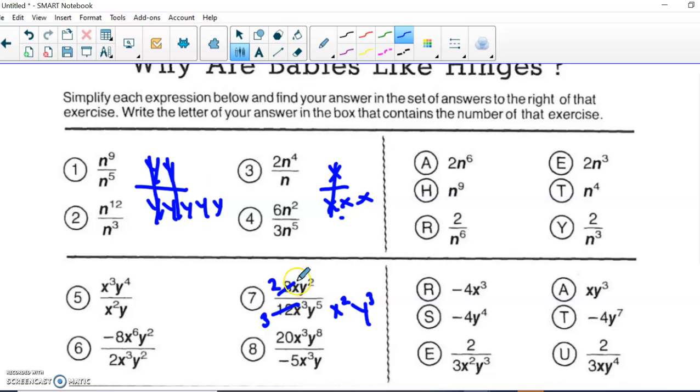So the answer I'm looking for is 2 over 3x to the second power, y to the third power. So it looks like e is the answer I'm looking for. So where you see a 7, you're going to match it up with e.